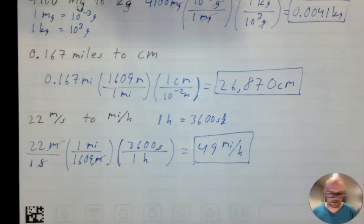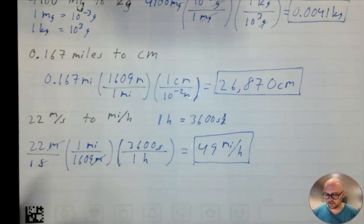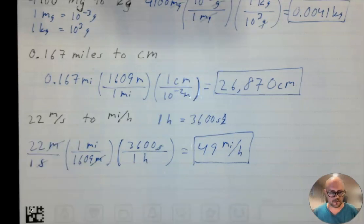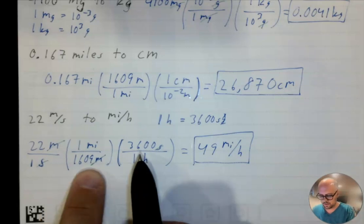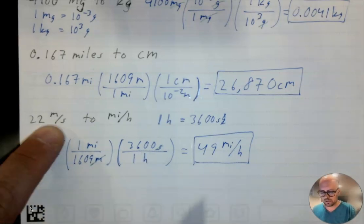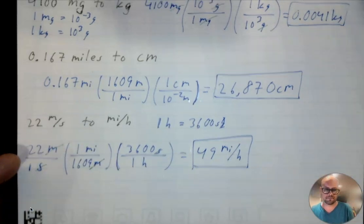You'll probably hear me say this in class a lot: to convert from meters per second to miles per hour, you double the meters per second and then add a little bit. If you divide these two out, you can see the actual conversion factor between meters per second and miles per hour.